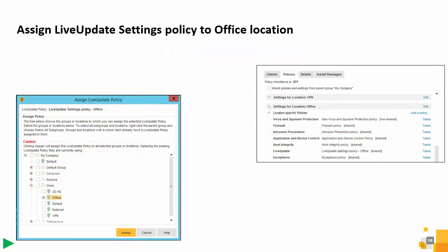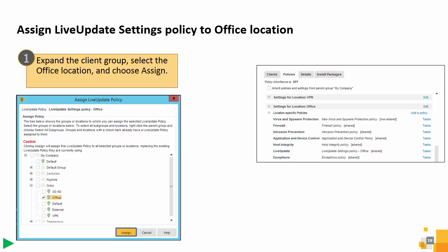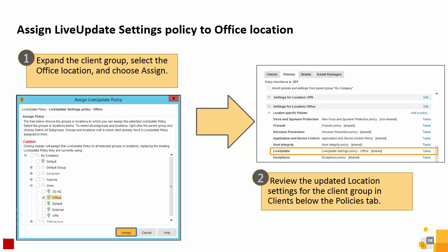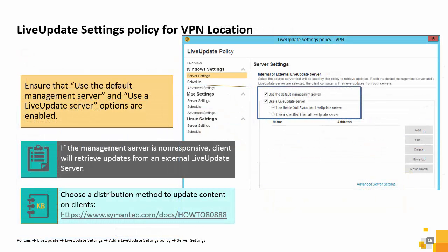The new policy is ready to be assigned to the office location. After the policy is assigned, you can review the updated location settings for the client group and clients below the Policies tab. Ensure that both the Use the Default Management Server and Use a Live Update Server options are enabled. If the management server is non-responsive, the clients retrieve updates from an external Live Update server.